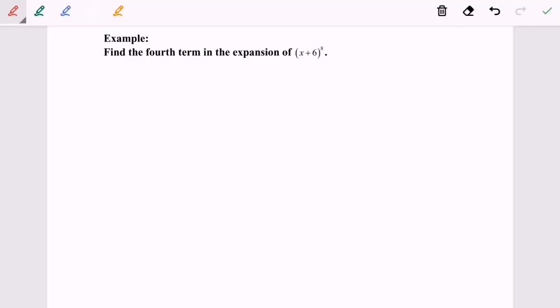Hello everyone, so now I'm going to discuss the example for the binomial expansion where n is a positive integer. Find the fourth term in the expansion of (x+6)^8.